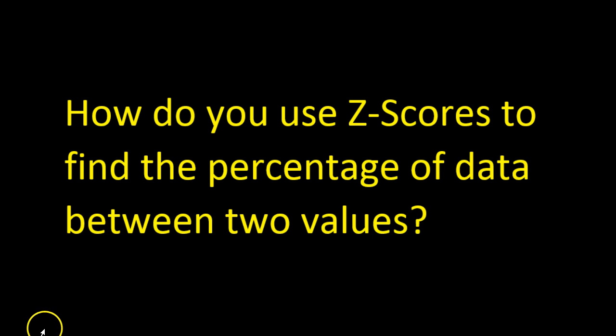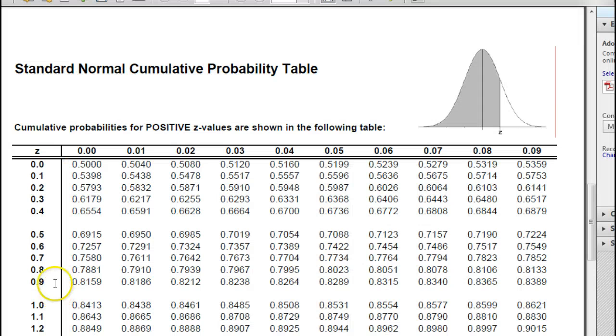In this video, I will teach you how to use z-scores to find the percentage of data between any two values. You are going to need a z-score table like this one, so if you don't have one, Google this phrase and print one out.